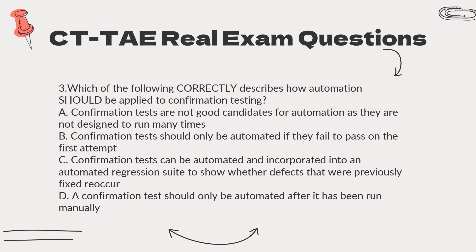Question 3. Which of the following correctly describes how automation should be applied to confirmation testing? A. Confirmation tests are not good candidates for automation as they are not designed to run many times. B. Confirmation tests should only be automated if they fail to pass on the first attempt. C. Confirmation tests can be automated and incorporated into an automated regression suite to show whether defects that were previously fixed reoccur. D. A confirmation test should only be automated after it has been run manually.